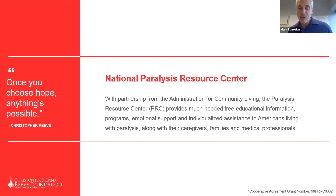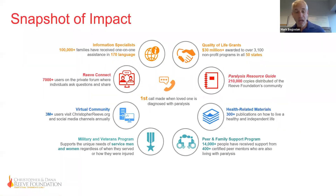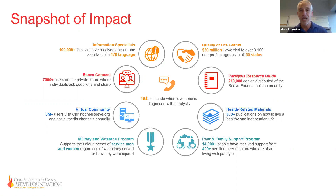The Christopher and Dana Reeve National Paralysis Resource Center has been federally funded since 2014 through a cooperative agreement with the U.S. Department of Health and Human Services Administration for Community Living (ACL). The National PRC provides deeply needed information, programs, and individualized support and assistance to over 5.3 million Americans living with paralysis. The foundation of the National PRC are our information specialists, who have provided one-on-one assistance to over 100,000 families in 170 languages.